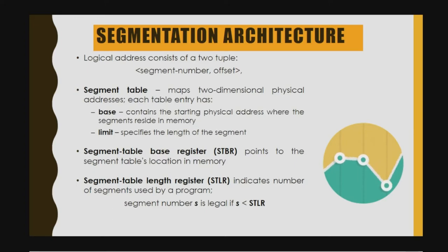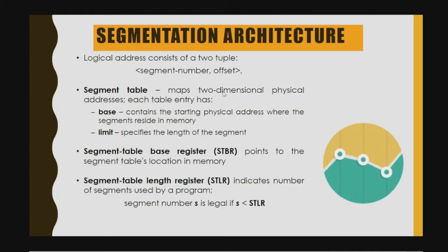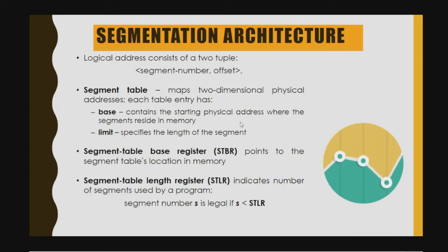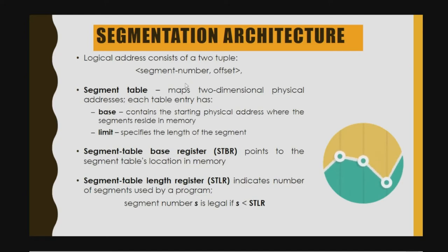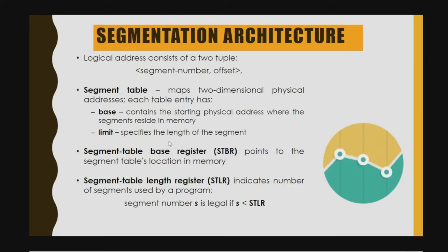The segmentation architecture has a logical address that consists of two tuples: the segment number and the offset. The segment table maps to a two-dimensional physical address, and each table entry has the base and the limit. The base contains the starting physical address where the segment resides in memory, and the limit specifies the length of the segment.